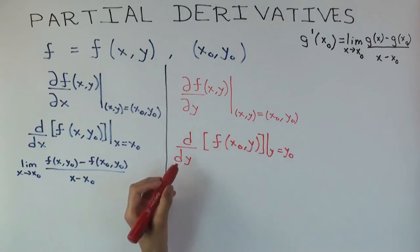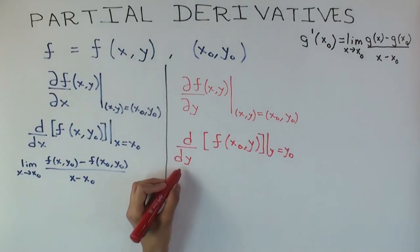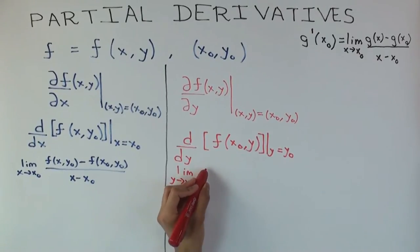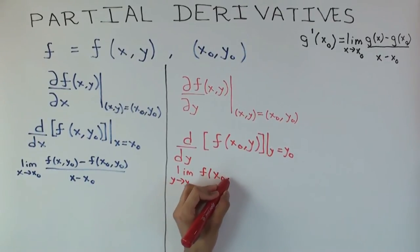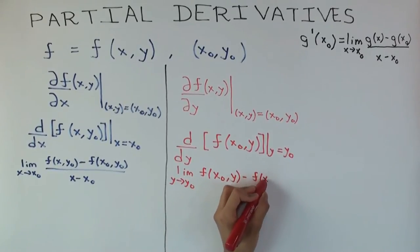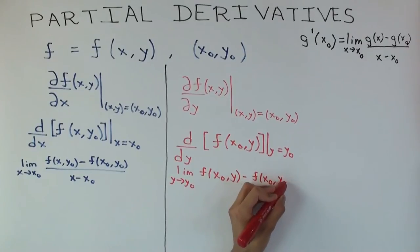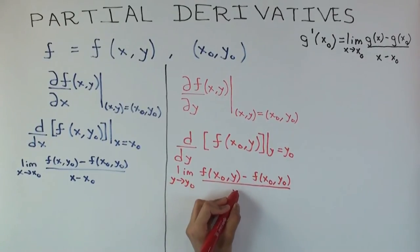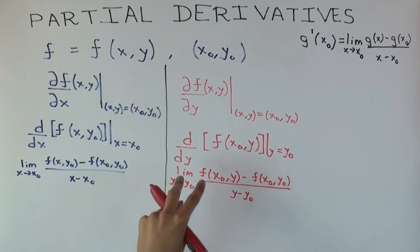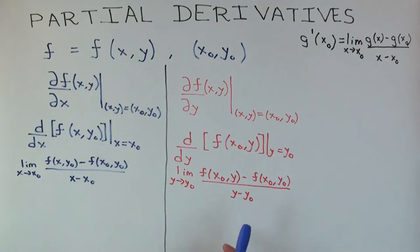Now for the y side. The limit as y approaches y0 of f(x0,y) minus f(x0,y0) over y minus y0. The x coordinate is fixed, you have the difference in the y values, dividing by the difference in y values.